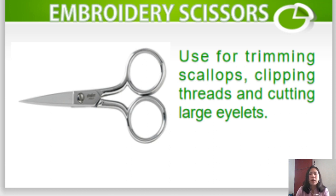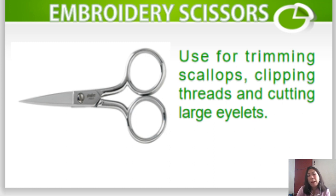Another important tool in embroidery is embroidery scissors. This is used for trimming scallops, clipping threads, and cutting large eyelets. Embroidery scissors are different from the scissors we normally use because this is a very small scissor intended for trimming eyelets on your threads. You cannot use ordinary scissors for this. If you have noticed, its tip is very pointed — it is intended for trimming scallops and clipping threads.